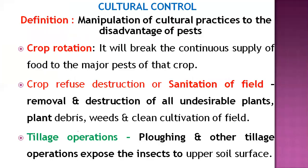Cultural control involves using cultural practices that are disadvantageous to pests. First is crop rotation — this practice breaks the continuous supply of food to major pests of a crop. If a farmer grows the same crop season after season, pest populations increase continuously because food availability remains high. Crop rotation breaks this chain and reduces pest populations.